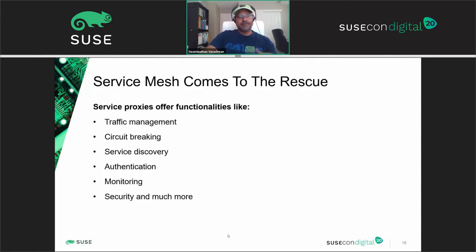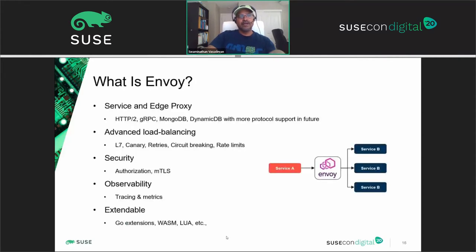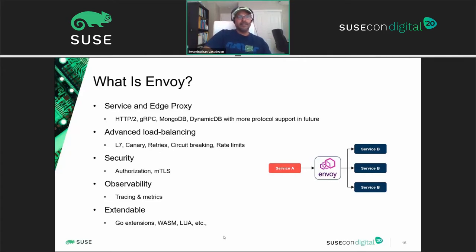Service proxies offer functionalities including traffic management, circuit breaking, service discovery, authentication, monitoring, security, and more. The service mesh depends on a service proxy called Envoy. Envoy can also be used as an edge proxy if you want to configure a gateway.